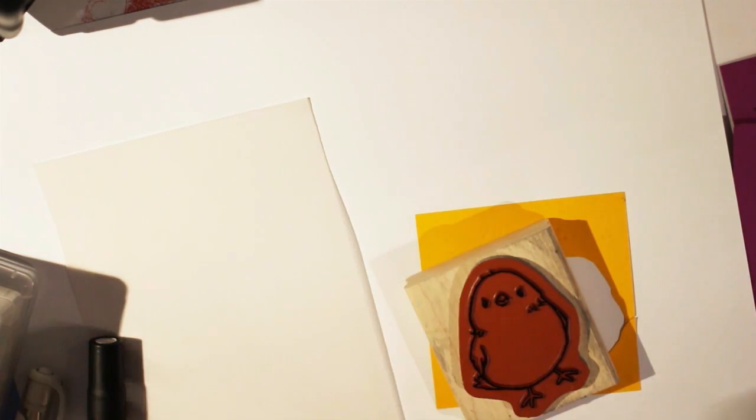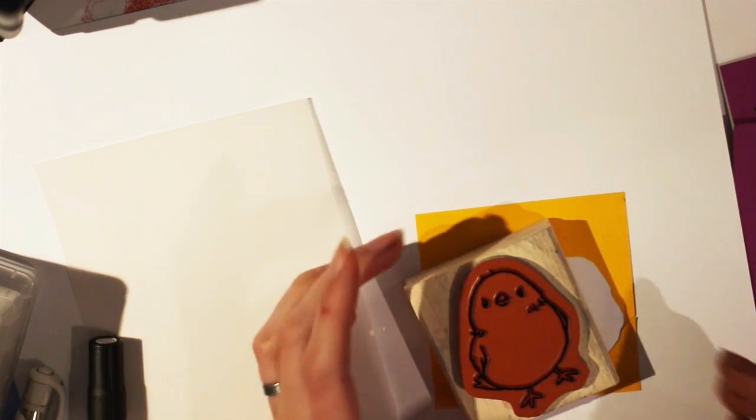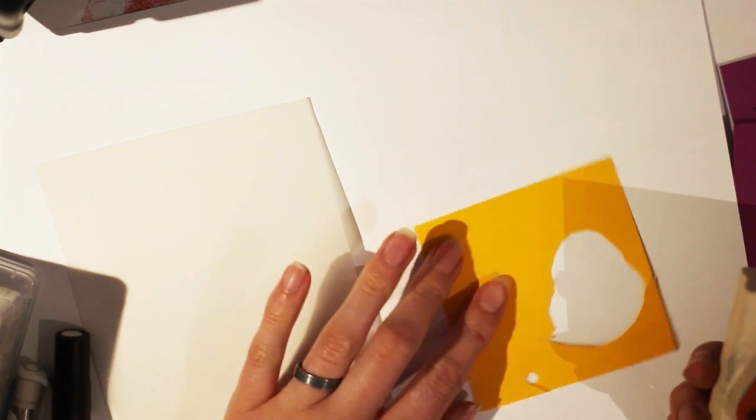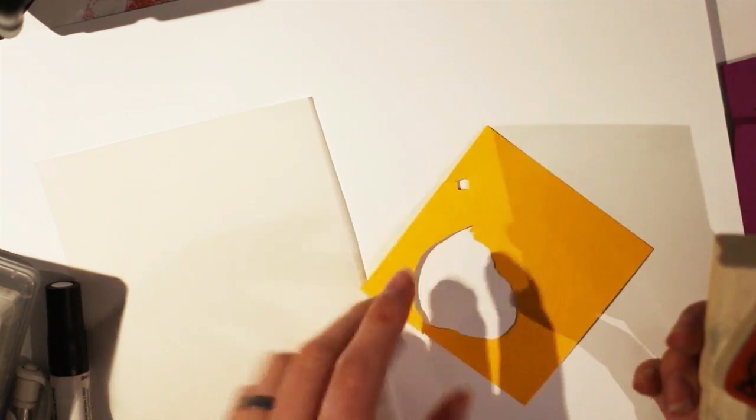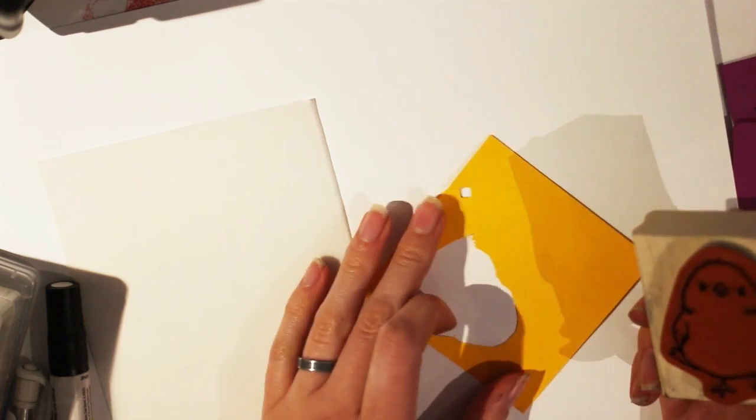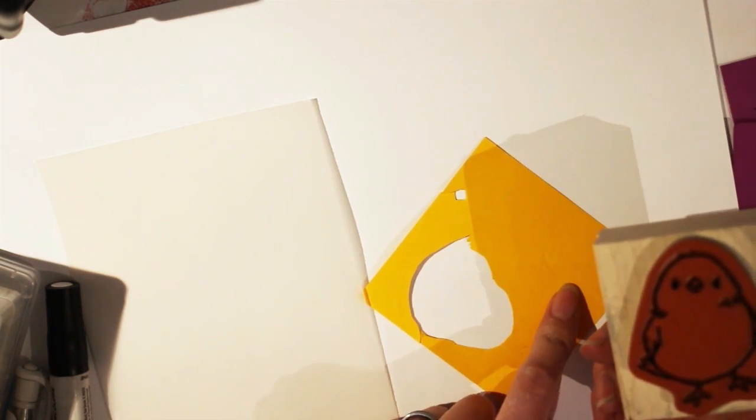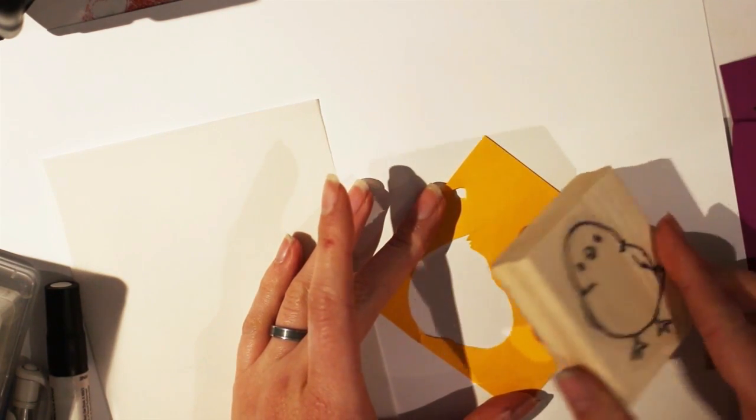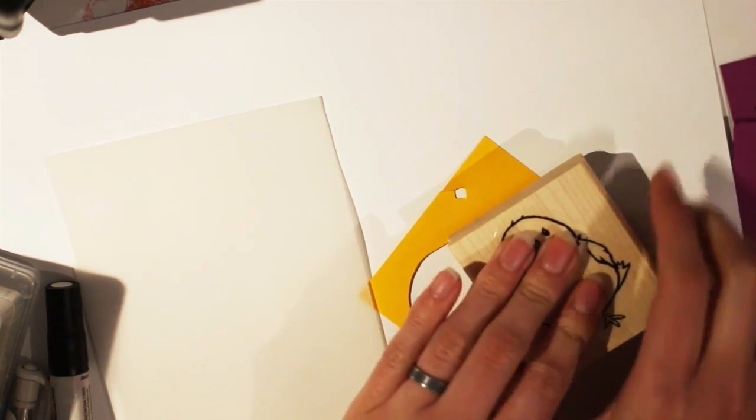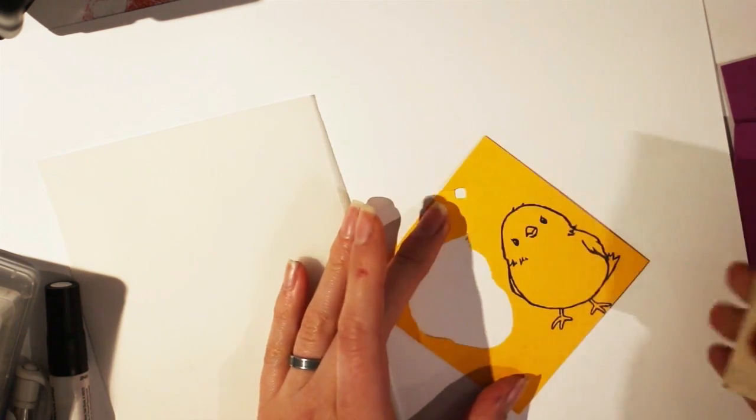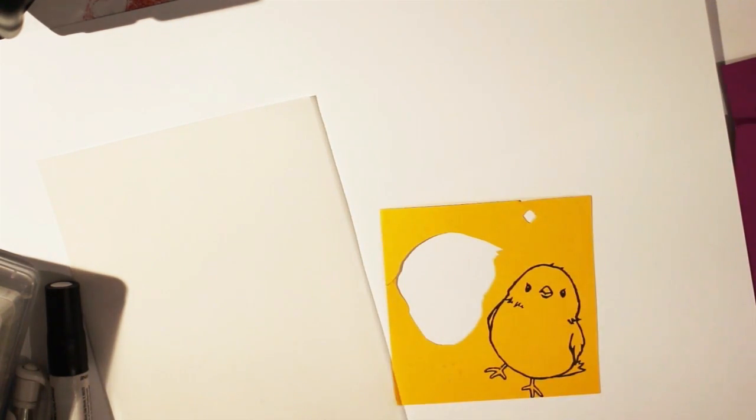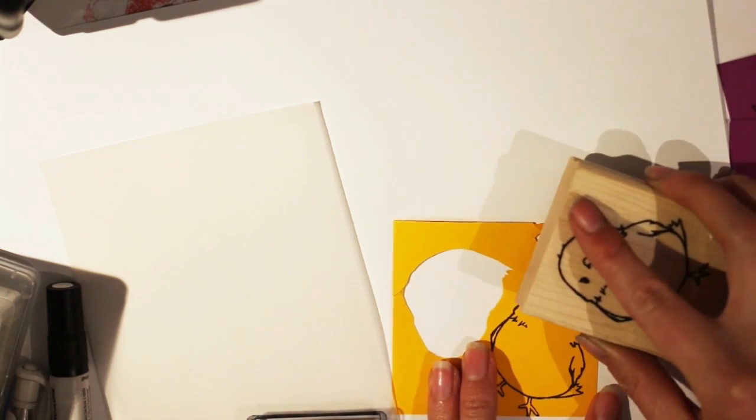So the ink I'm using is StazOn. I'm using this specifically because I'm also going to be stamping on the vellum and I didn't want to just use any ink. I wanted something that I knew wasn't going to smudge and make a mess so I'm just using my scrap paper. It doesn't matter if I cut off the legs because I'm not going to use the legs. And I almost forgot I just also want to add a beak so I just inked the top of his head.